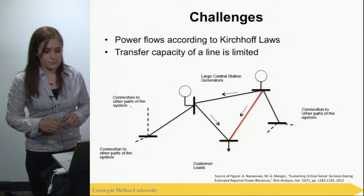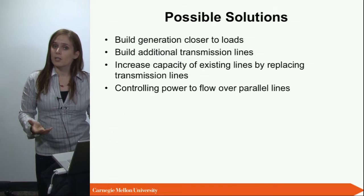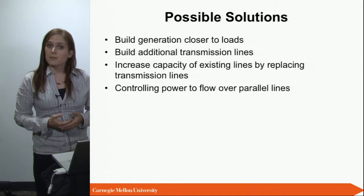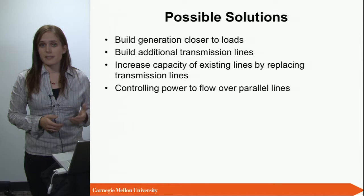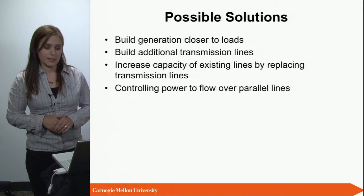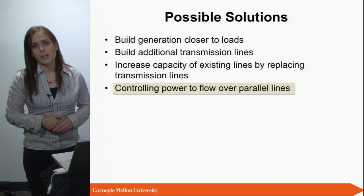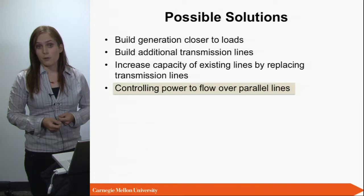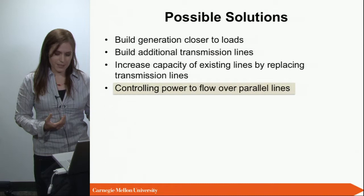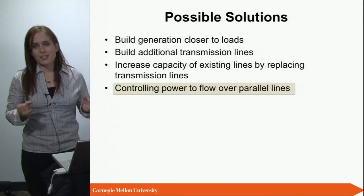Ways to solve this problem include building generation closer to load so less transmission is needed, building additional transmission lines for extra transfer capacity, or increasing the capacity of existing lines or transmission corridors by replacing or adding lines. Another option — which my group works on extensively — is controlling how power flows over the meshed network. Since Kirchhoff's laws are based on line parameters, if we can influence those parameters we can influence where power flows and essentially work around Kirchhoff's laws.